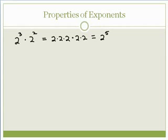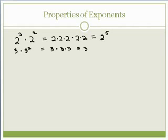Let's take another example. Let's say we had 3 times 3 squared. We're starting off with the 3 and then multiplying it by 3 squared. 3 squared is 3 times 3. So you can see all we're doing is multiplying 3 times itself 3 times. Now let's see if that's enough to figure out the rule.